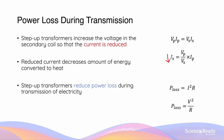By reducing the current, the amount of energy that's converted into unwanted heat is decreased during transmission, because the power loss over the power line is given by I squared R, where I is the current flowing through the transmission line after it has gone through the step-up transformer. Therefore, step-up transformers reduce power loss by decreasing the magnitude of current through the transmission power line.